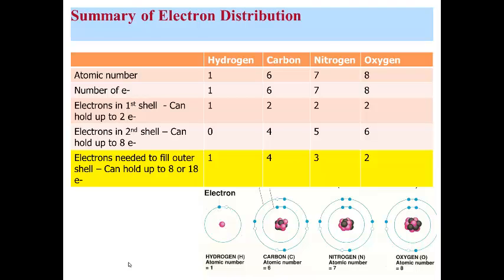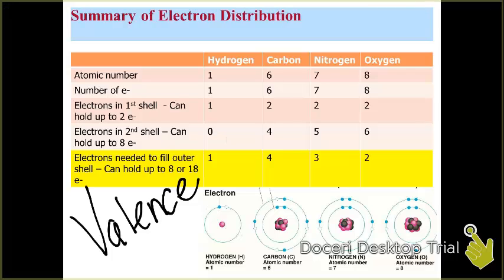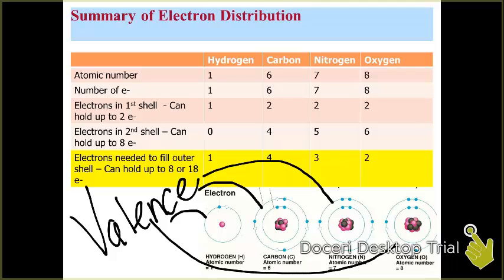So what is that outer shell? We call that outer shell something specific. It's referred to as the valence shell. The valence shell represents the outer shell of any atom. We talk about the number of valence shell electrons as well as the number of valence shell electrons needed to complete that outer shell, and that's important for bonding.